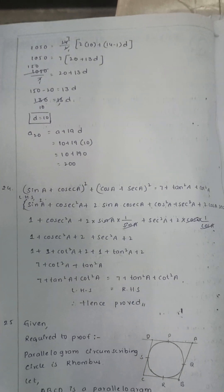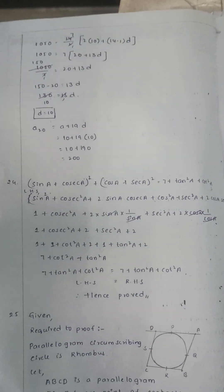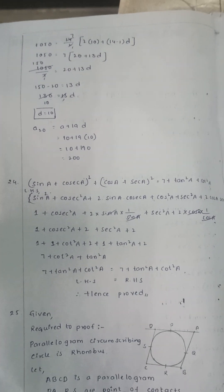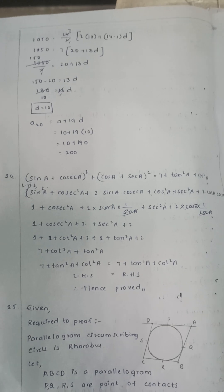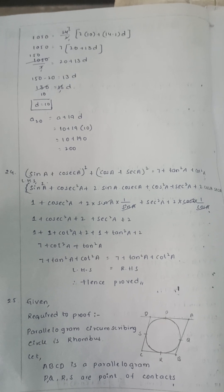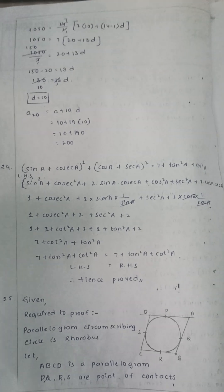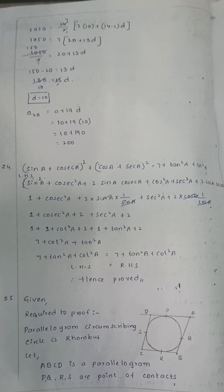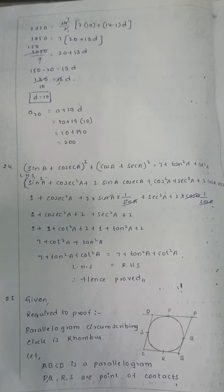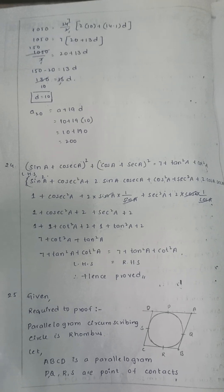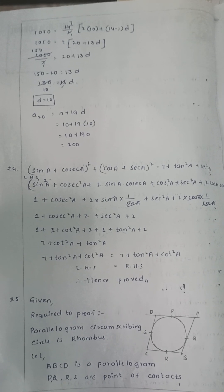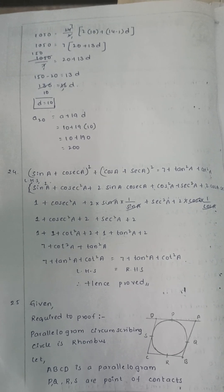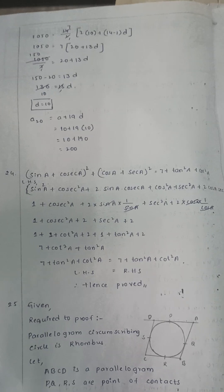Prove that sin A / (1 + cos A) + (1 + cos A) / sin A = 2 cosec A. Here you can use algebraic identities, trigonometric reciprocal identities, and trigonometric identities.